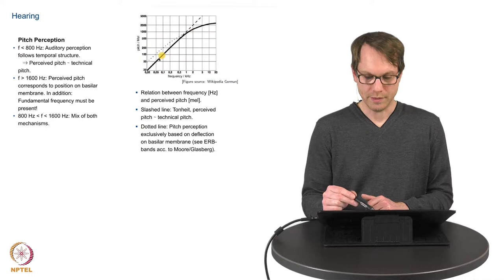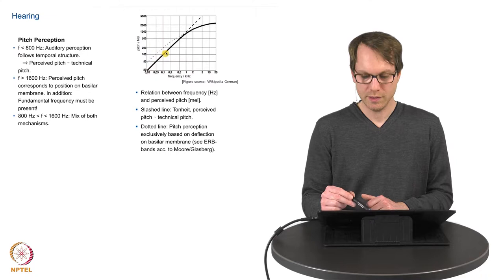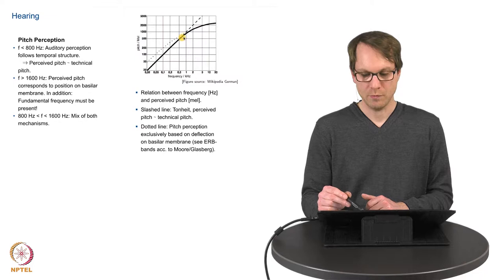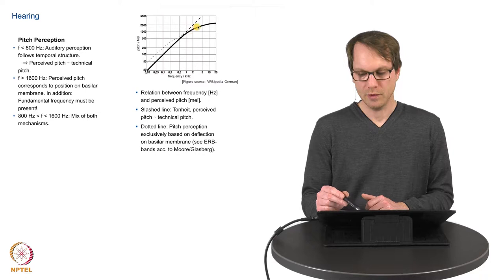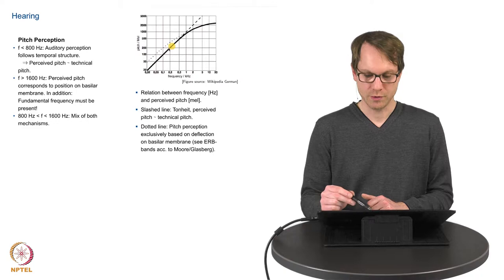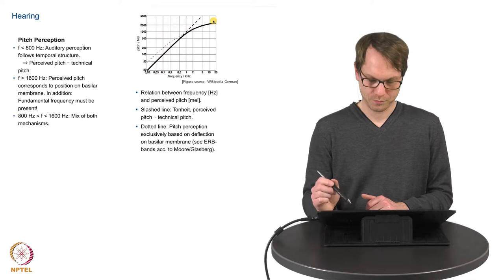The solid line is now what we perceive and this means that we have a rather linear perception until let's say 500, 600 Hz. Then we have a kind of mixture of the two mechanisms and then we have a logarithmic pitch perception. And this is just related to the shape of the basilar membrane, at least dominantly so.